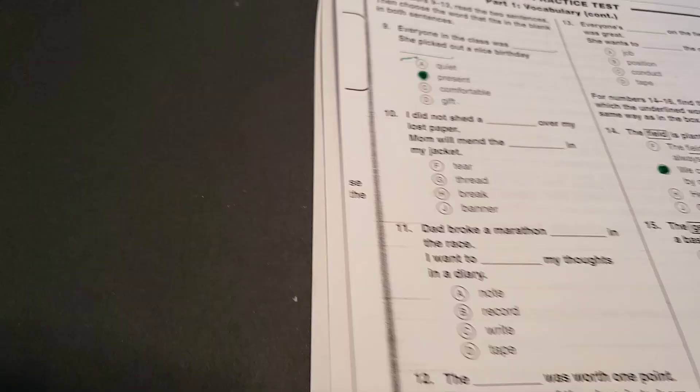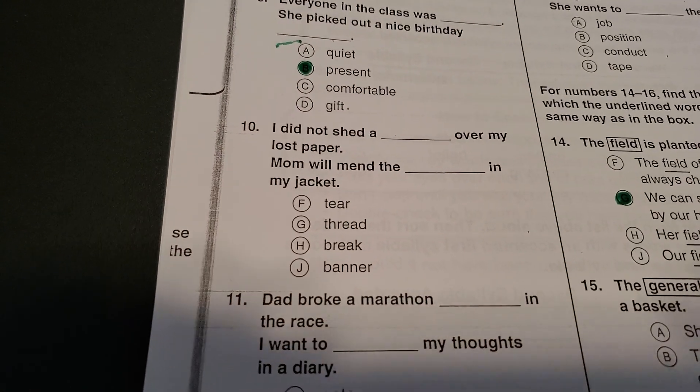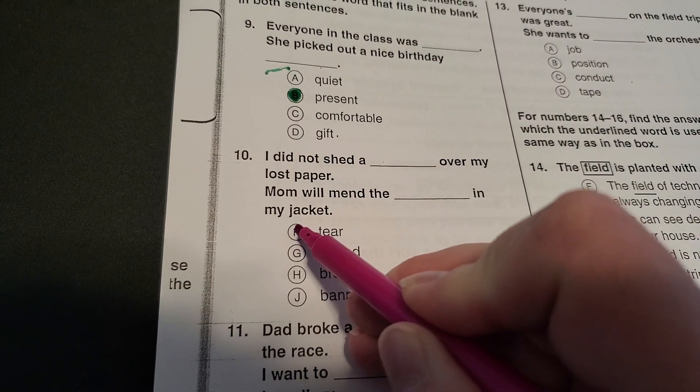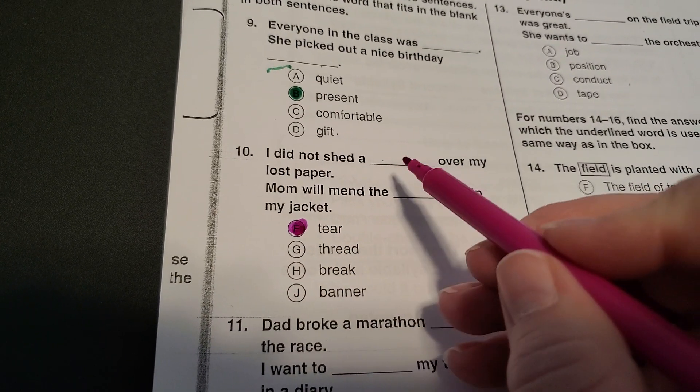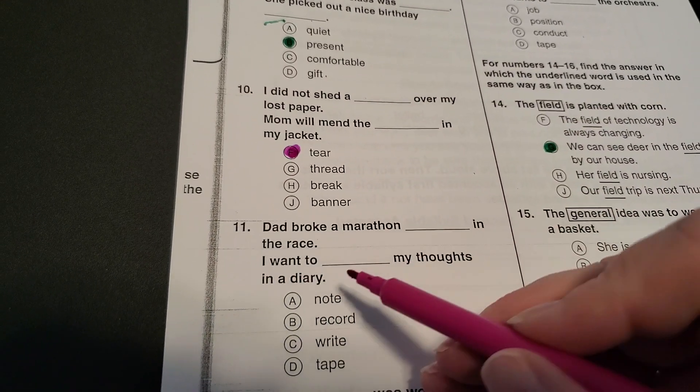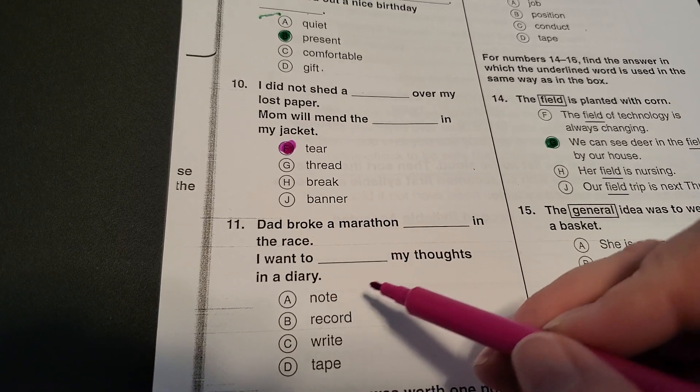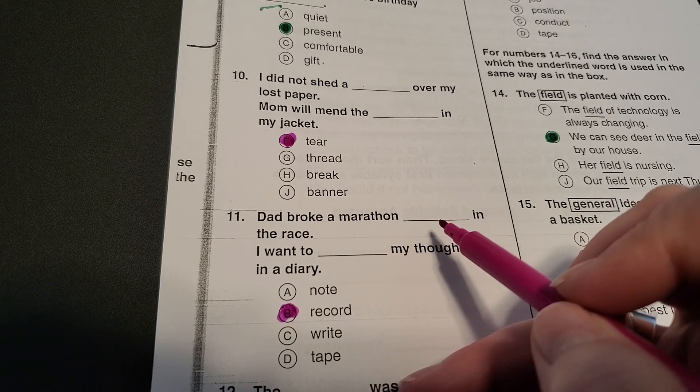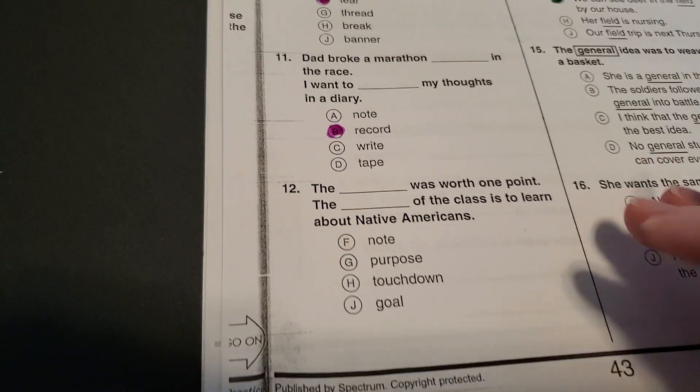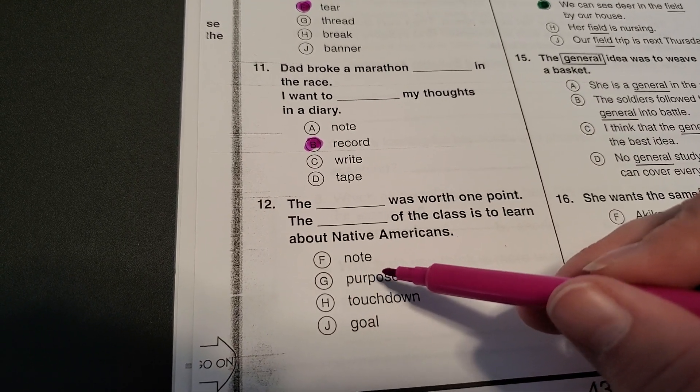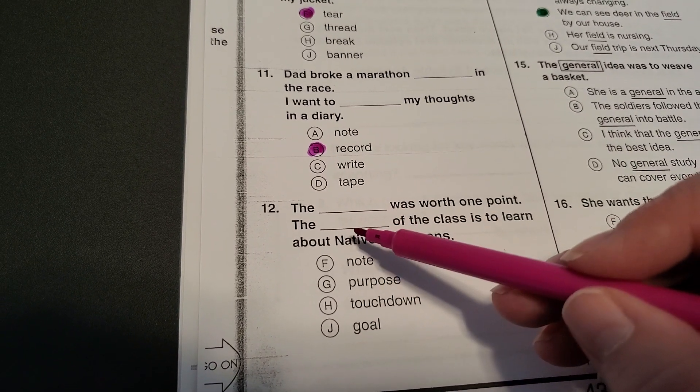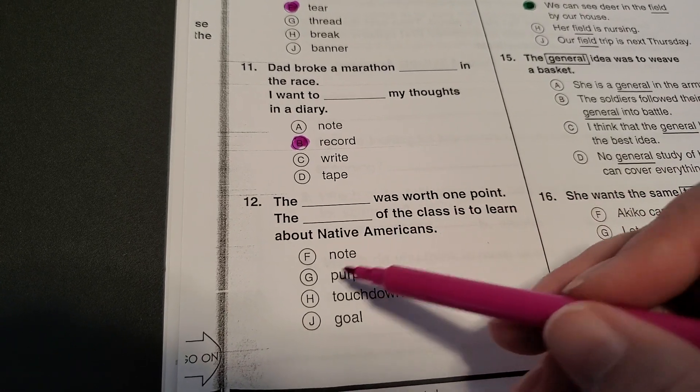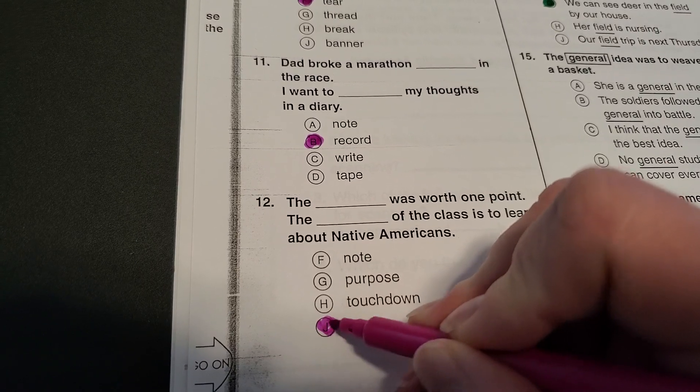So I thought I would just do a couple more to refresh your memory. I'm going to go ahead and flip this packet over. We're going to check this one out because this one was super important. I did not shed a blank over my lost paper. Mom will mend the blank in my jacket. I hope everybody put this homograph right here: tear or tear. I did not shed a tear and my mom will mend the tear. Dad broke the marathon blank in the race. I want to blank my thoughts in a diary. This is another homograph. This one would be record or record. I broke the marathon record and record my thoughts. The blank was worth one point. The blank of the class is to learn about Native Americans. Touchdown or goal. The goal was worth one point, and the goal of the class was to learn about Native Americans. So it should be goal. Hopefully you guys got those right.